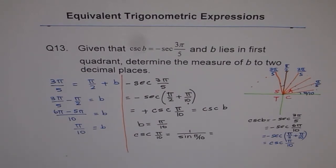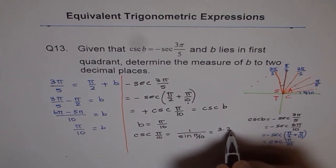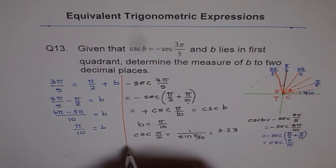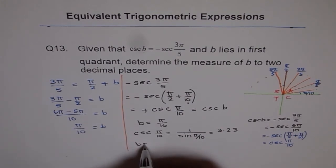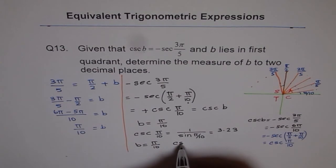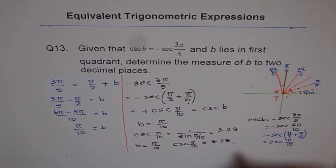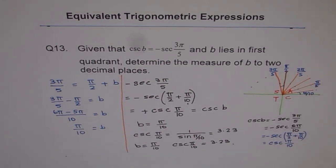So that is our answer, 3.23 to 2 decimal places. And therefore, we have B equals π/10 and cosecant π/10 equals 3.23. That is our answer. Thank you.